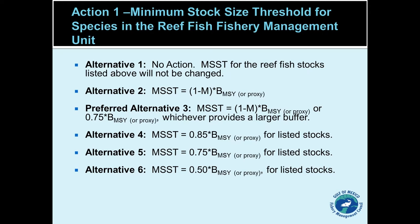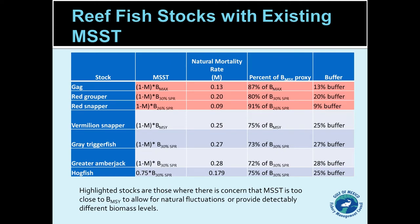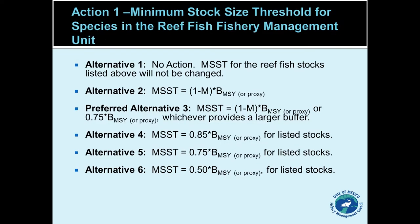Alternative three is the preferred alternative. It's an either/or approach: use the formula or 75% of BMSY, whichever provides the larger buffer. Everything will be at least a 25% buffer, but if the formula would give a larger buffer, the existing buffer would continue to remain in place. This preferred alternative affects the three stocks highlighted in red — gag would go from a 13% buffer to 25%, red grouper from 20% to 25%, and red snapper from 9% to 25%. Everything else would stay at 25–28% depending on the species.